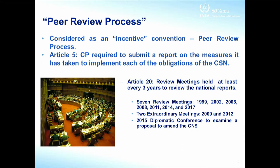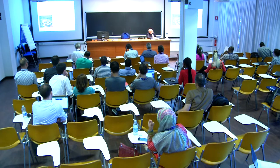There was a diplomatic conference in 2015 to examine a proposal to amend the CNS, which was not adopted. Instead, the conference adopted a Declaration on Nuclear Safety, which is another non-binding instrument belonging to the category of declarations of principles — similar to the Universal Declaration on Human Rights adopted by the UN General Assembly, which is also non-binding. This Declaration sets up a number of general principles that states should abide by in order to strengthen nuclear safety in light of Fukushima.